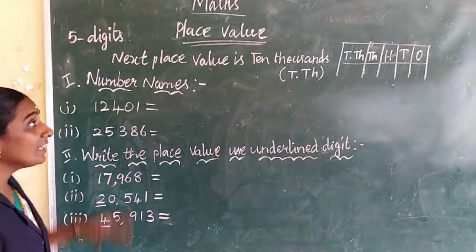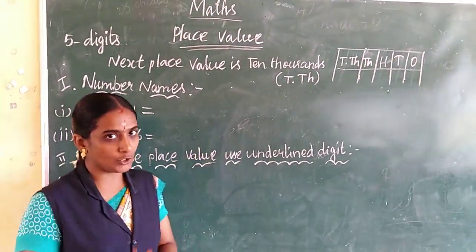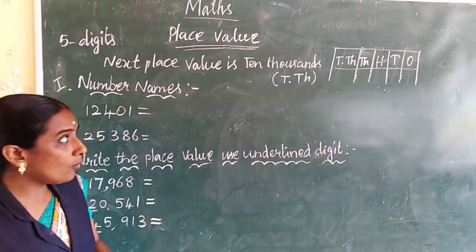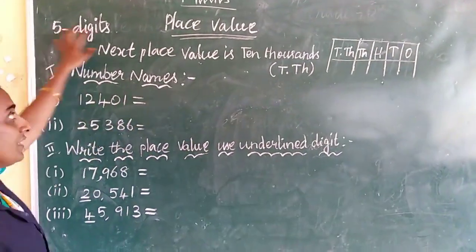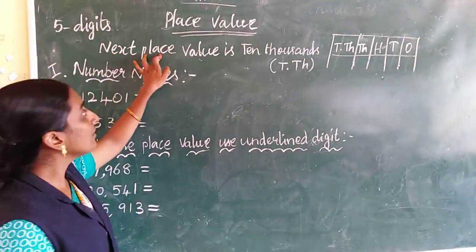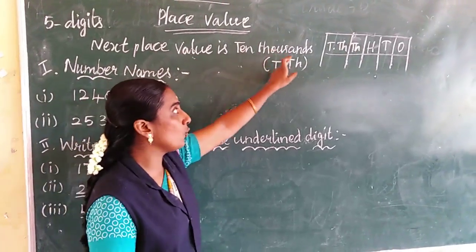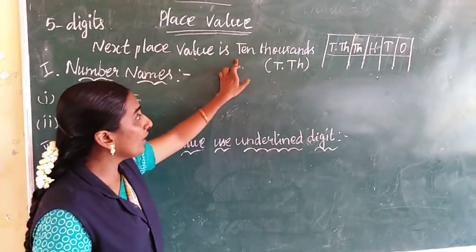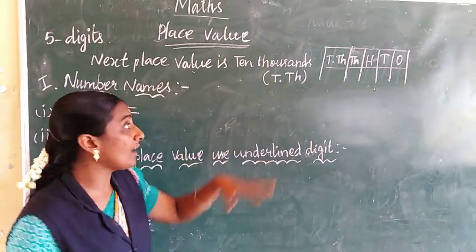Hi everyone. Already we have seen 4 place value, now 5 place value — a 5 digit number. The place value here is 10,000. 10,000 is a sort of term, right?